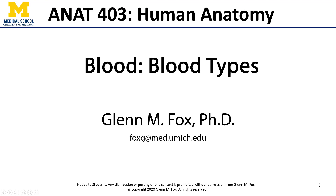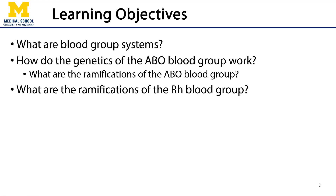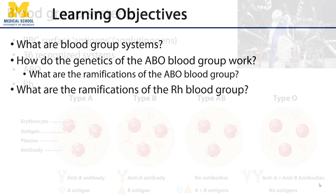Hi! Let's talk about blood types. In this video we'll talk about blood group systems, in particular the ABO and Rh blood groups. We'll talk about their genetics and the ramifications of these blood groups.